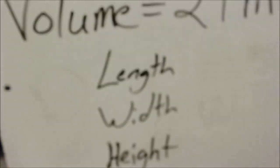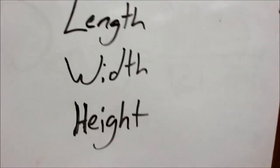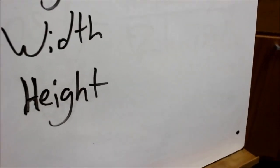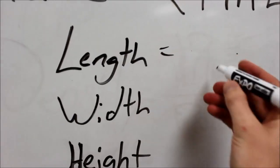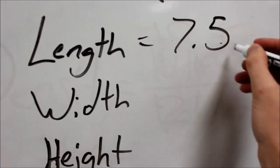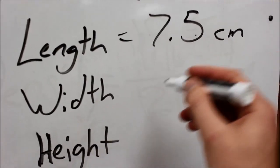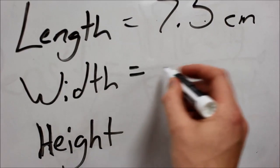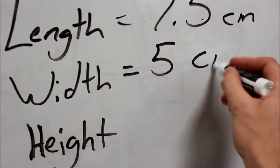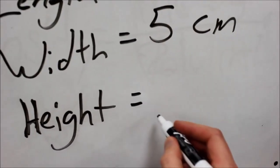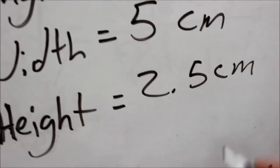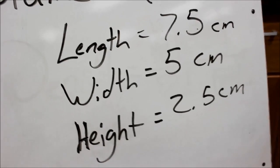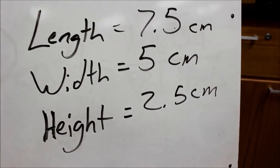So we have, over here, the length was 7.5 centimeters, the width was 5 centimeters, and the height was 2.5 centimeters. Now what I would have to do is just multiply these three together.